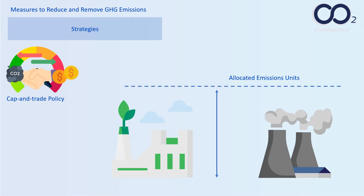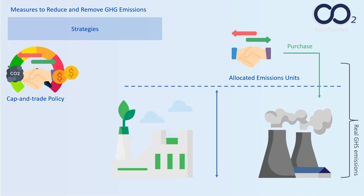Under the cap-and-trade policy, each organization can generate carbon emissions up to a predetermined limit called a cap. If an organization's emissions reach the cap, the organization must buy carbon credits from other organizations.